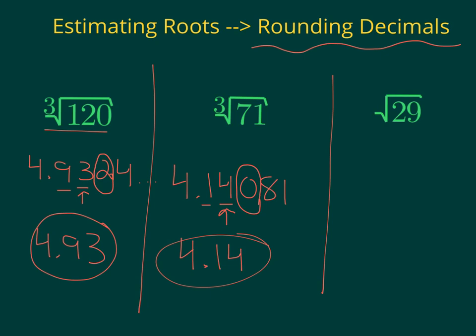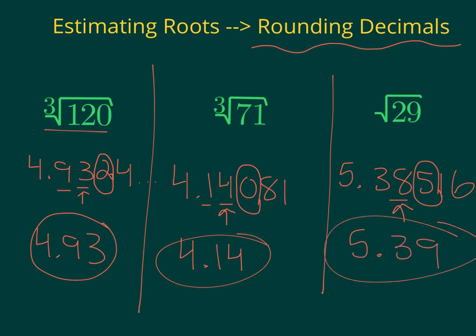The last one — square root, not cube root, of 29. If you calculate that on your calculator, you'll get 5.38516. The second decimal place — circle the third. That 5 tells you to round up to 5.39. These are simple estimations of cube roots and square roots using a calculator and rounding.